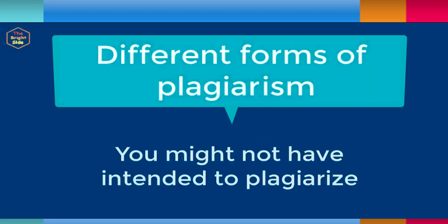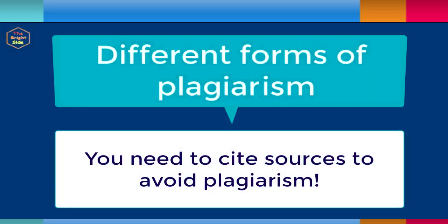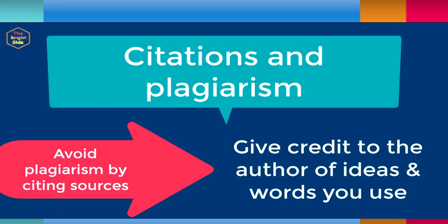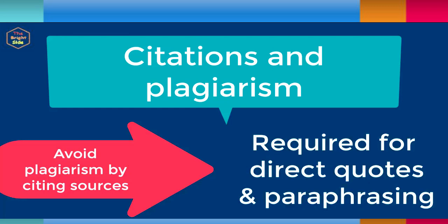You can see that plagiarism may be much more subtle than copying a friend's paper or copying directly from a source. Failing to properly cite sources can also be considered plagiarism. When you use citations, you provide the source of your information by giving credit to the original author. The reader of your paper should be able to see exactly where you found the information used for your assignment. Citing sources is required both when you directly quote a source and when you paraphrase a source.